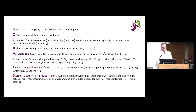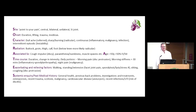'S' stands for systemic inquiry and past medical history. How about their general health? Previous back problems and investigations, other problems such as osteoporosis and trauma. Have they suffered from scoliosis or malignancy? Cardiovascular disease might suggest an aortic aneurysm as a possibility, as that can cause back pain. Any recent infections — because discitis is a rare but worth bearing in mind cause of back pain.